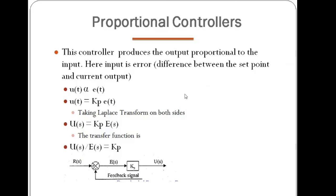The input is the error — the difference between the set point and the current output, i.e., what is required versus what is actual. The error comparator compares the set point with the current output, and depending upon the error value it functions. So u(t) is the control action, and it is directly proportional to e(t).